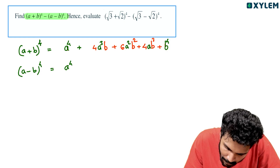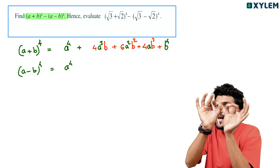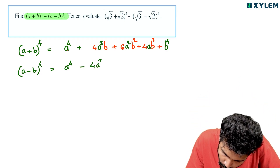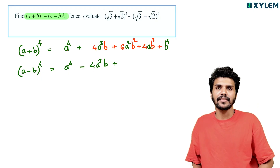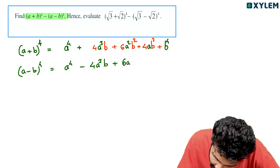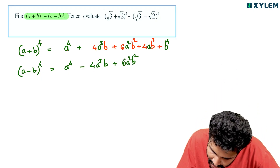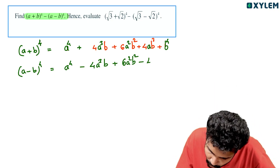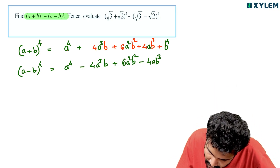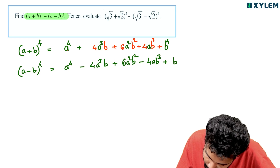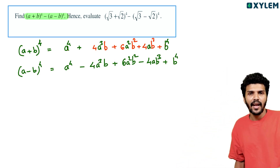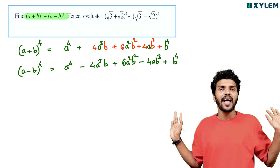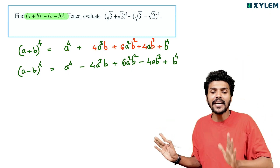a raised to 4, plus 4a cubed b, plus 6a squared b squared, minus 4ab cubed, plus b raised to 4. The signs alternate plus minus — alternate plus minus.